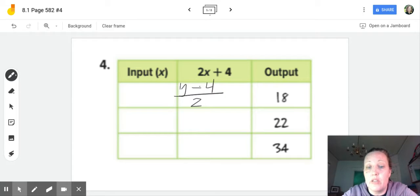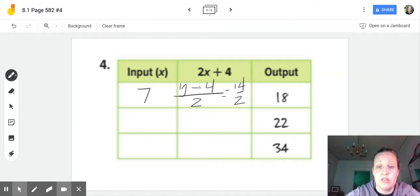So what's our input? 18 minus four equals 14, divided by two, and that's seven.